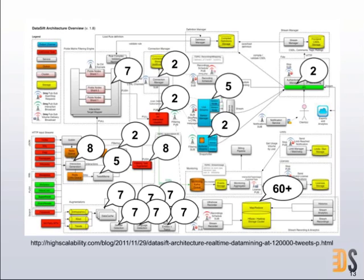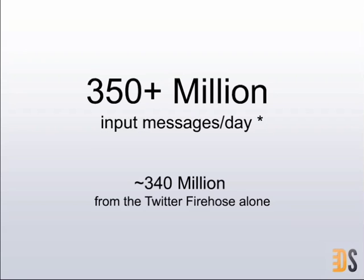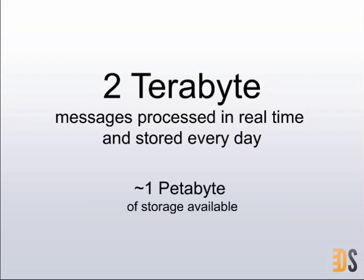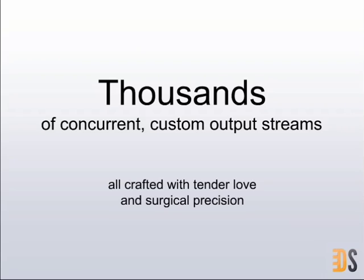We care a lot about scaling and performance. The diagram shows the number of servers allocated to each service — each box has anywhere between 2 and 60 different servers depending on the load of each component. At any time, depending on the time of day, we receive between 3,500 and 12,000 messages per second, most of them from Twitter. We have about 2 terabytes of data flowing into storage every day, and thousands of custom streams with different companies connected at all times.